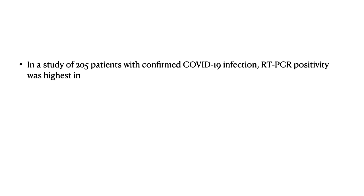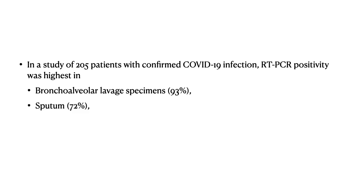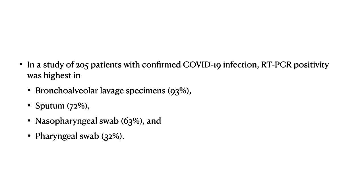In a study of 205 patients with confirmed COVID-19 infection, RT-PCR positivity was highest with bronchoalveolar lavage specimens at 93%, sputum at 72%, nasopharyngeal swab at 63%, and pharyngeal swab at 32%. It is always better to collect at least two samples: one nasopharyngeal swab and one lower respiratory tract sample, which can be an endotracheal aspirate, bronchoalveolar lavage, or sputum if the patient is not intubated.